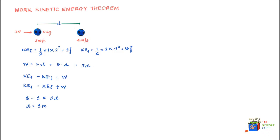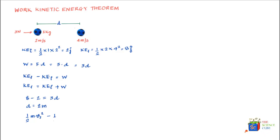We can also write the work-energy theorem in a slightly expanded form: ½mv_f² − ½mv_i² = W = F · d.